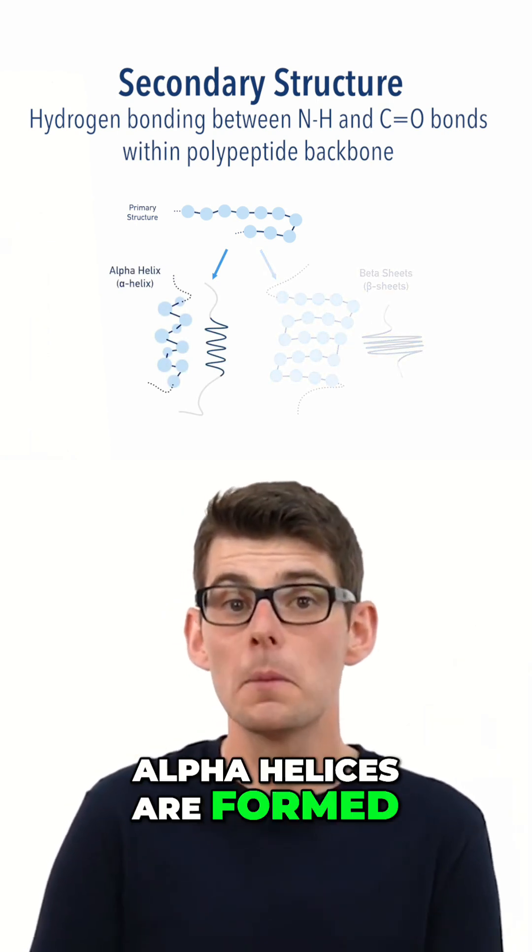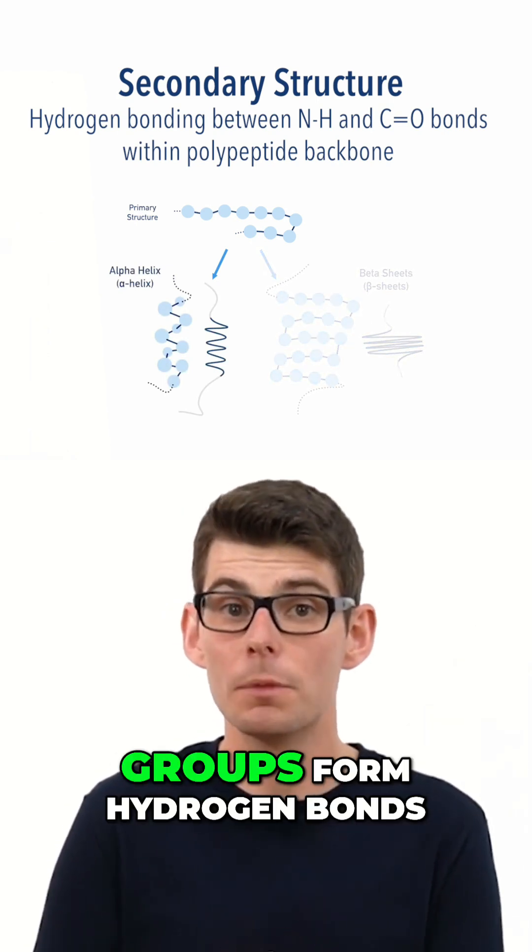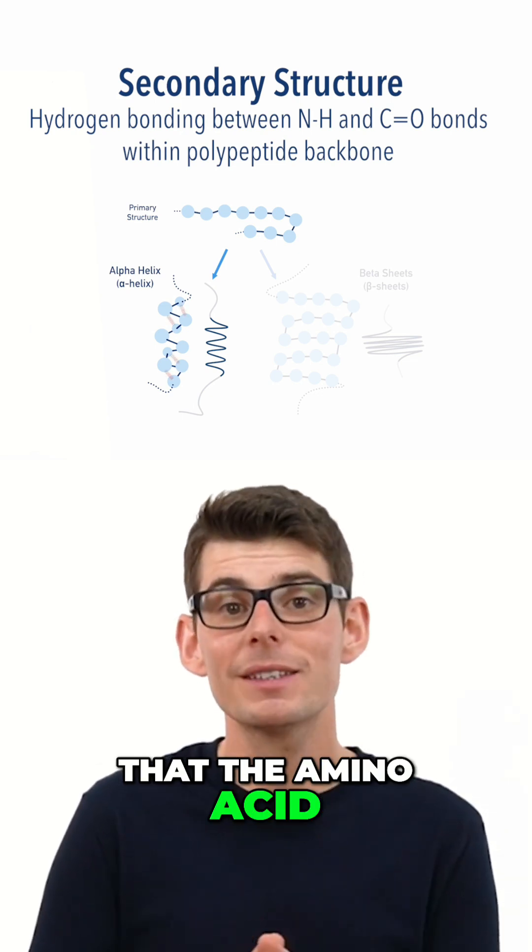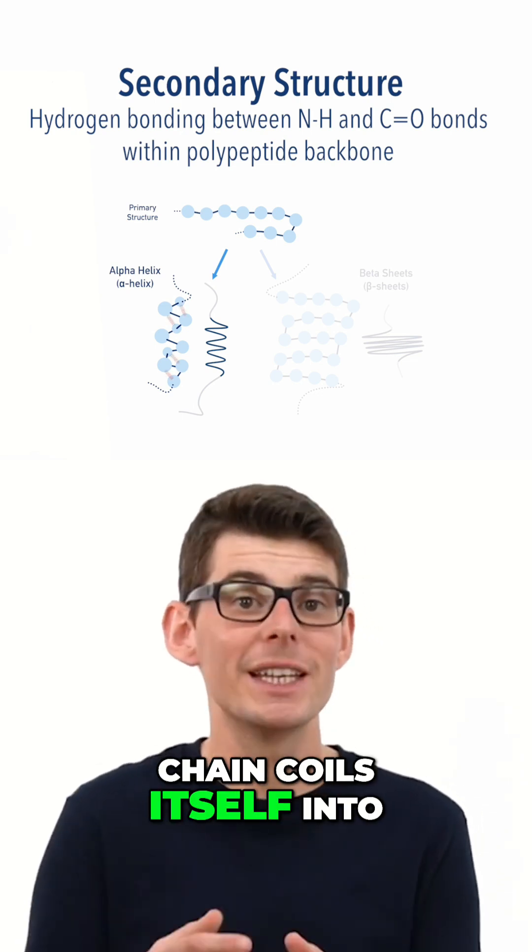Alpha helices are formed when NH and C double O groups form hydrogen bonds in such a way that the amino acid chain coils itself into a spiral.